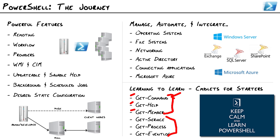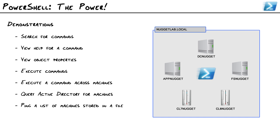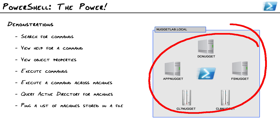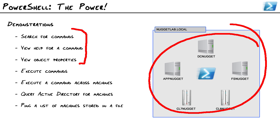Who's ready for a demo? Here's what we're going to do. I've got a Hyper-V server with five servers: the nuggetlab.local domain, a domain controller, an application server, a file server, and a couple of clients — CL7 running Windows 7 and CL8 running Windows 8. We'll show how to search for commands using Get-Command, view help, explore object properties with Get-Member, execute commands across many machines, query Active Directory, and send a ping across the entire network.